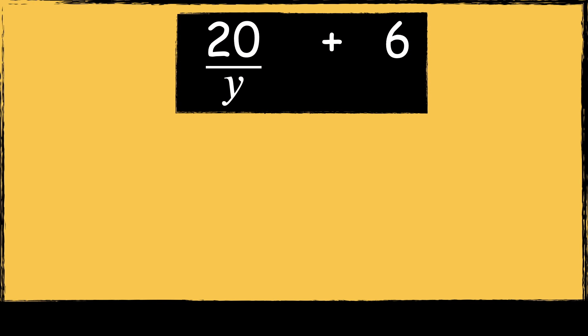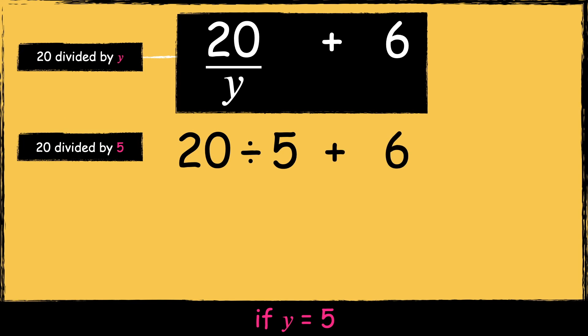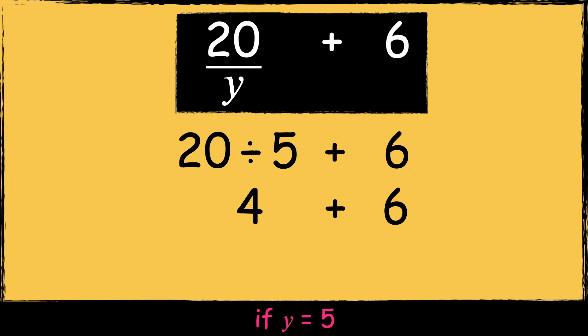Here's the next expression: 20 divided by Y, plus 6. In algebra, division is normally represented using a fraction bar. We're going to find the value of this expression for if Y equals 5. So we have 20 divided by Y, and if Y is 5, then the expression says 20 divided by 5, add 6. 20 divided by 5 is 4. Now we're left with the addition: 4 add 6 equals 10. So if Y equals 5, the value of this expression is 10.